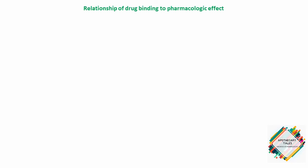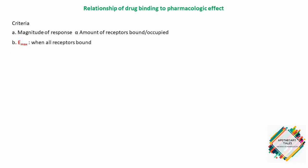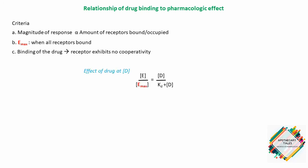The mathematical model describing drug concentration and receptor binding can be applied to dose-response relationships, provided the following assumptions are met: the magnitude of response is proportional to the amount of receptors occupied, Emax occurs when all receptors are bound, and drug binding exhibits no cooperativity. The formula includes E, the effect of the drug at concentration D; Emax, the maximal effect; and KDE, the equilibrium dissociation constant.